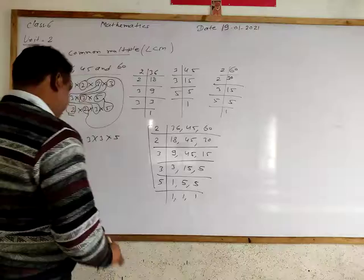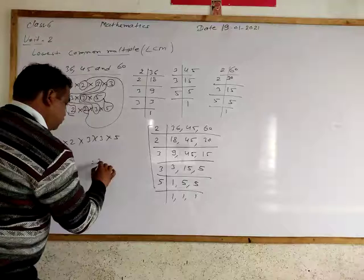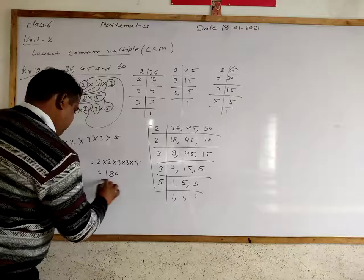Now divide by 5, we get 1, 1, and 1. So this is LCM of 36, 45, and 60. So 2 multiply 2 multiply 3 multiply 3 multiply 5, that is equal to 180.